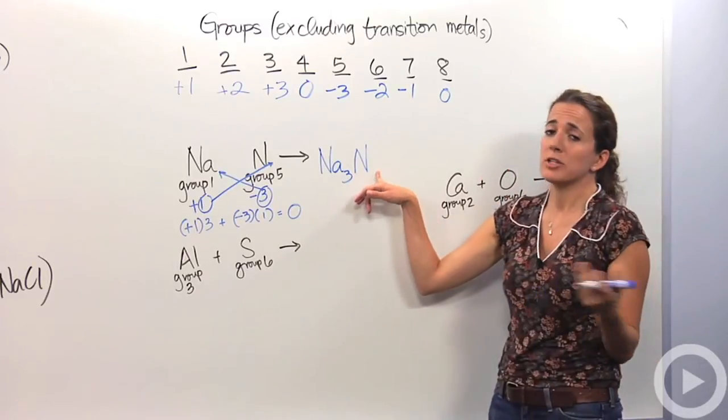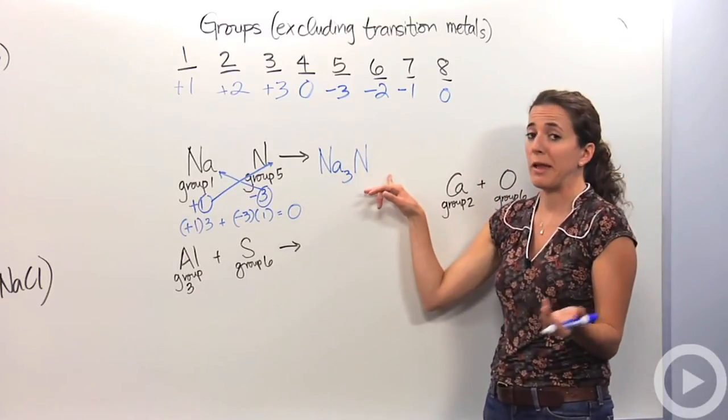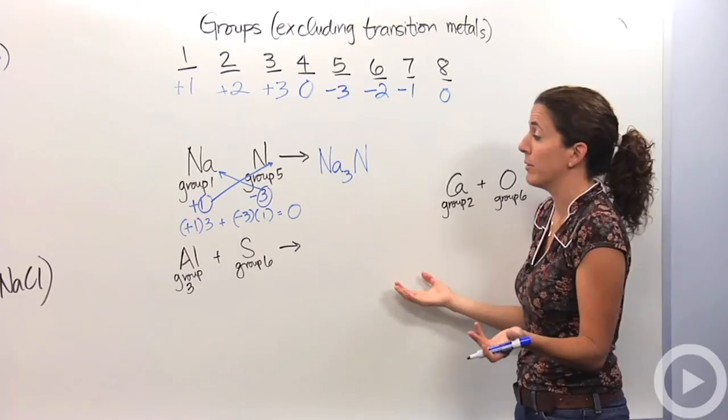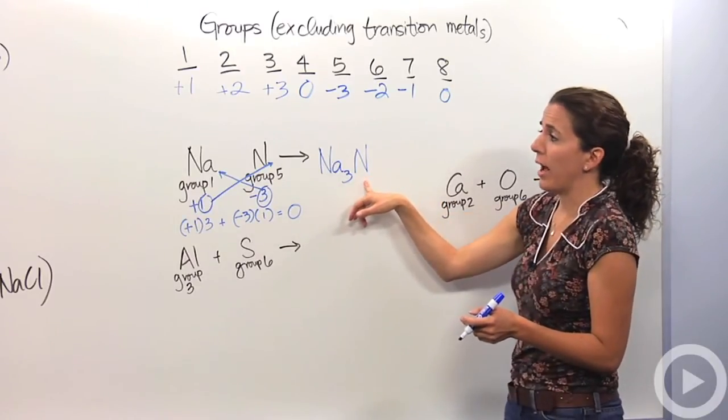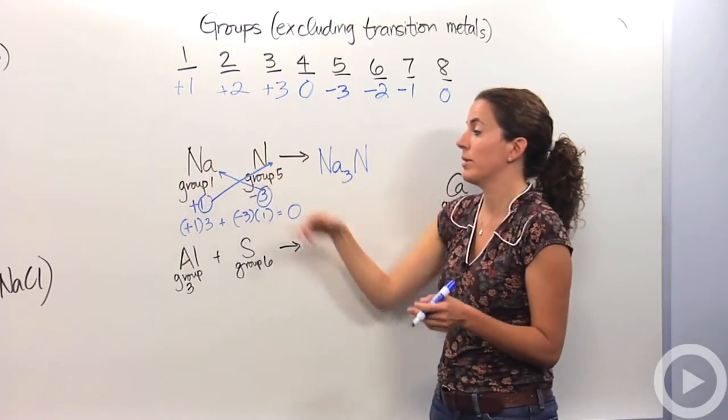Na3N. Notice I didn't put the one there, it's just unnecessary. The fact that the nitrogen is actually there tells us that there's one of them there, at minimum. So this would be our ionic combination of sodium and nitrogen.